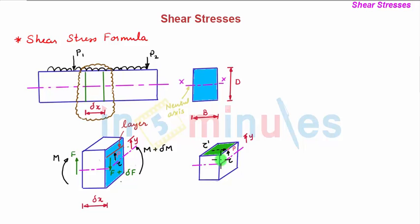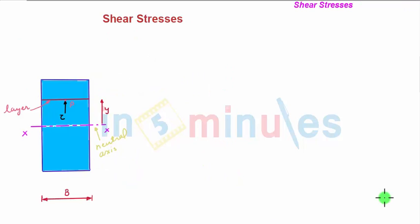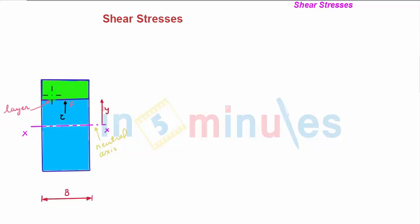Let us now determine the shear stress tau. The figure shows an enlarged view of the cross-section with the layer at which point P is located, where we need to determine the transverse shear stress tau. Consider the area shaded in green on the cross-section above the layer considered.